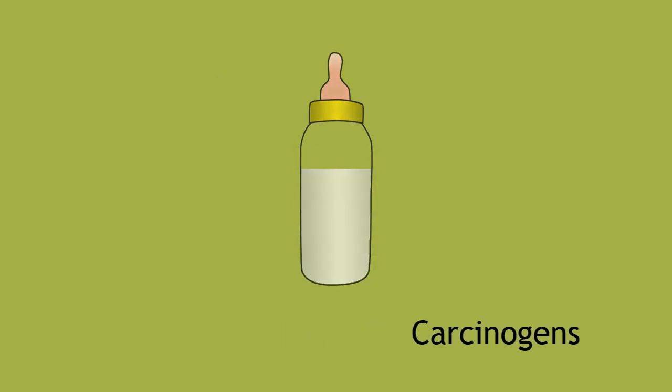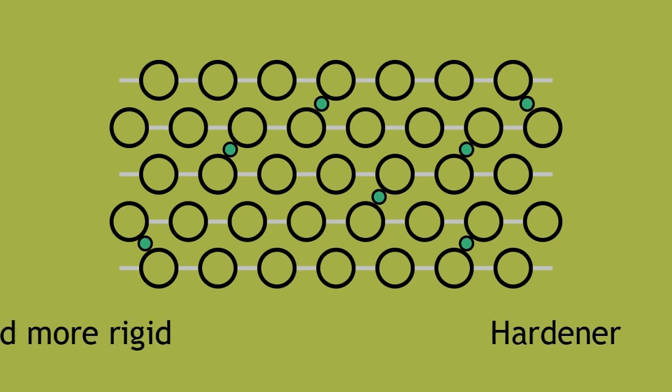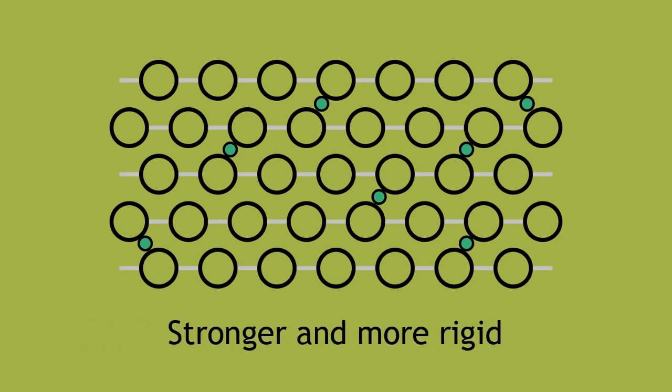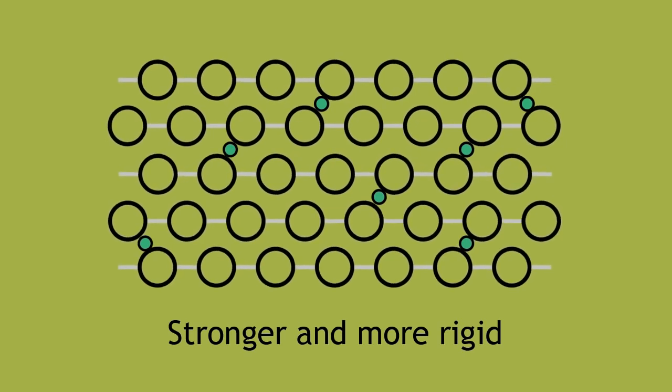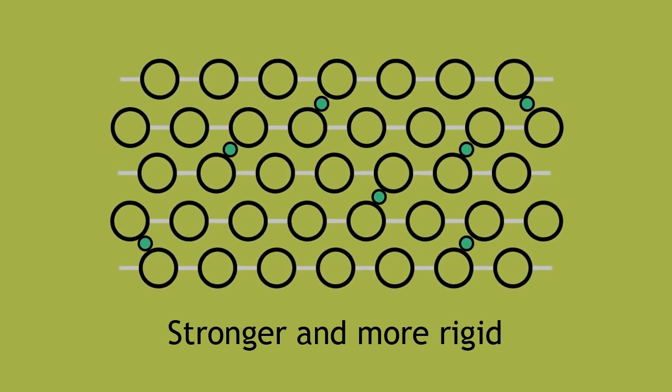A hardener has the opposite effect on a polymer. A hardener or cross-linking agent makes a polymer stronger and more rigid. We can think of a cross-linking agent as a bridge. It holds the polymer chains in place and does not allow for much movement of the polymers.